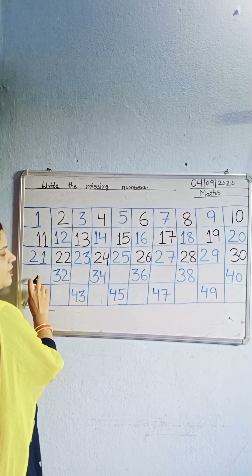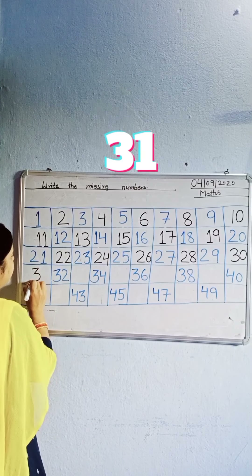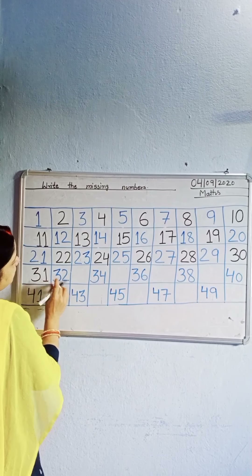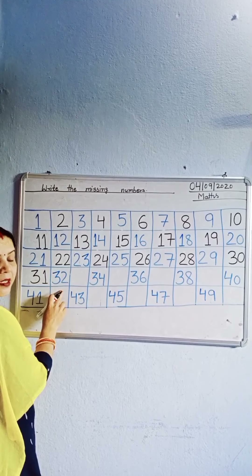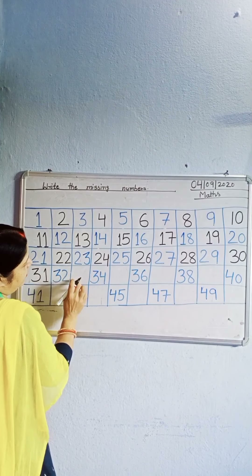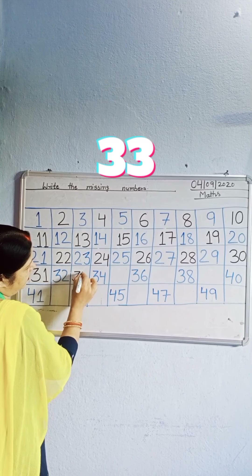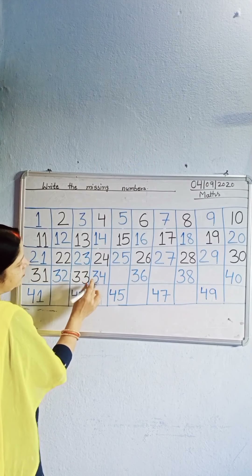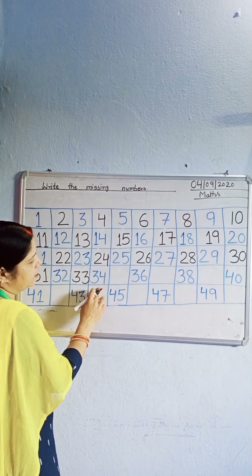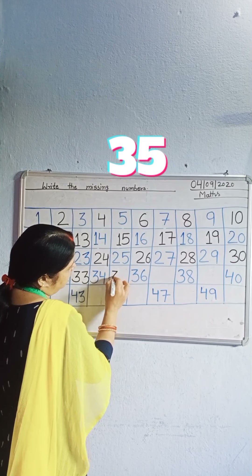Which number is missing? 31. Next, which number? 32. Which number is missing? 33. Which number? 34. Which number is missing? 35.